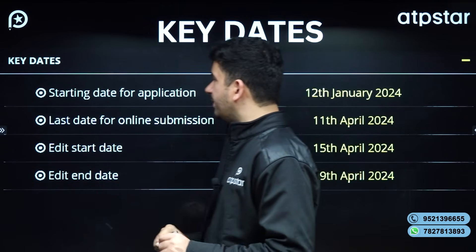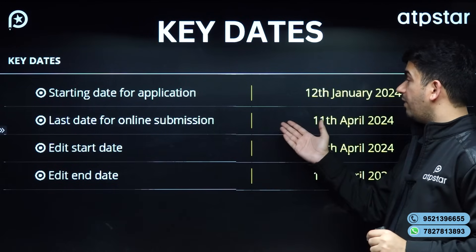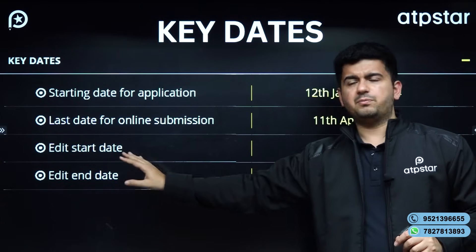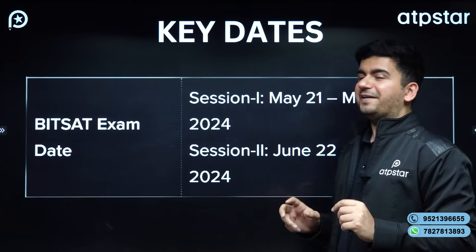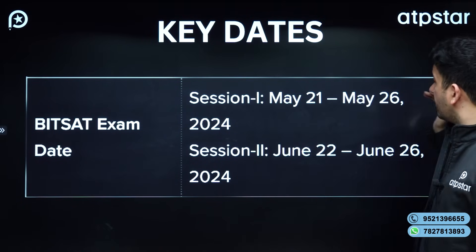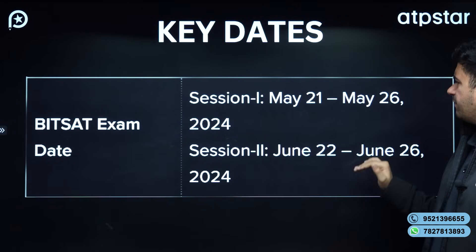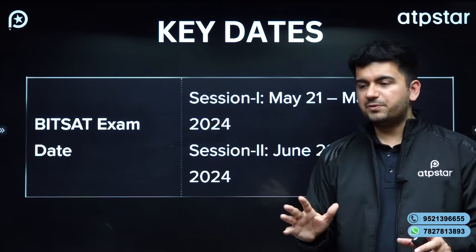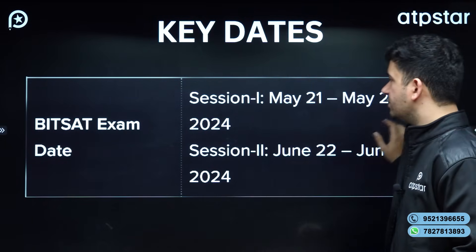The starting date of application is 12th January 2024 and the last date of online submission is 11th April 2024. There is also an option for editing the form after submission. The BITSAT exam will happen in 2 sessions. The first session will be conducted from 21st May to 26th May, just before JEE Advanced. The second session will happen almost after a month, from 22nd June to 26th June 2024. This particular test series will be valid for both sessions.